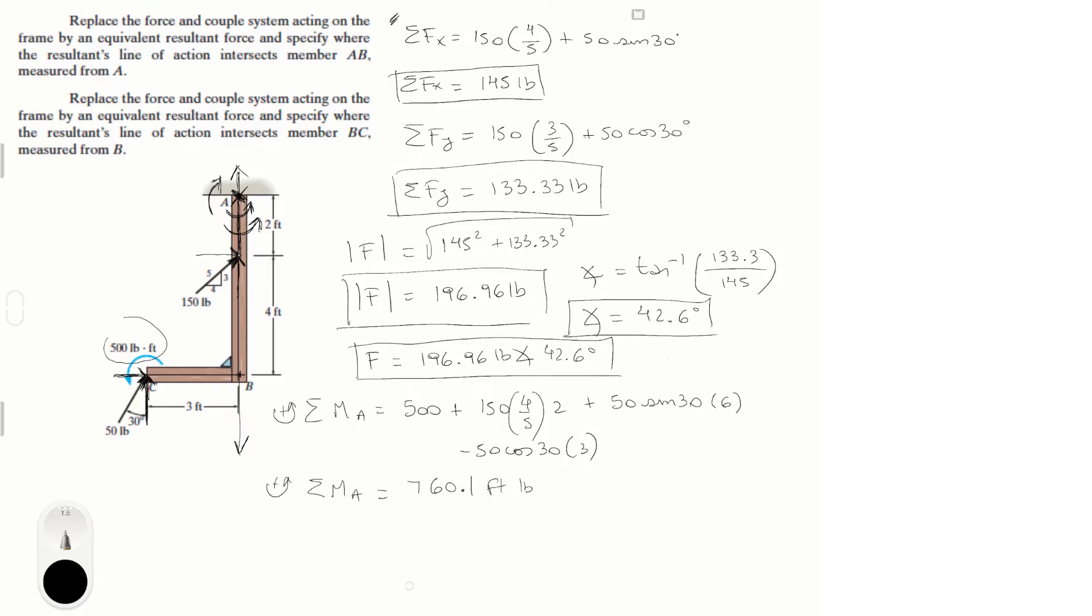That's the sum of the moments about A assuming counterclockwise is positive. And now to find that distance from point A to where that is applied in the A and B line, you know that the sum of the moments about A is equal to the forces on the x. The forces on the y are not really creating any moment because it's on the same line, times that distance. Which would be 760.1 is equal to 145 times that distance, and that distance is 5.24 feet from A. So it will be somewhere around here where the force is applied.